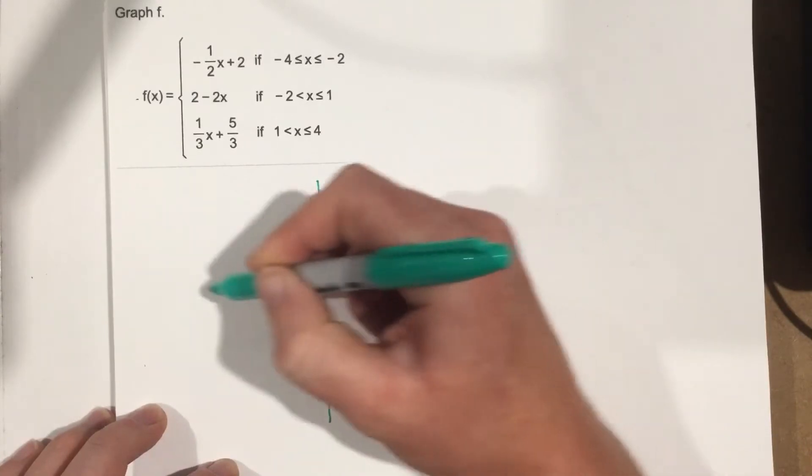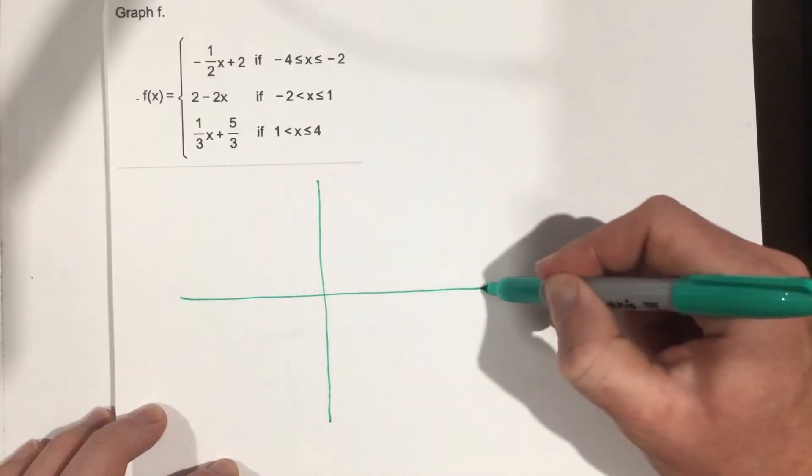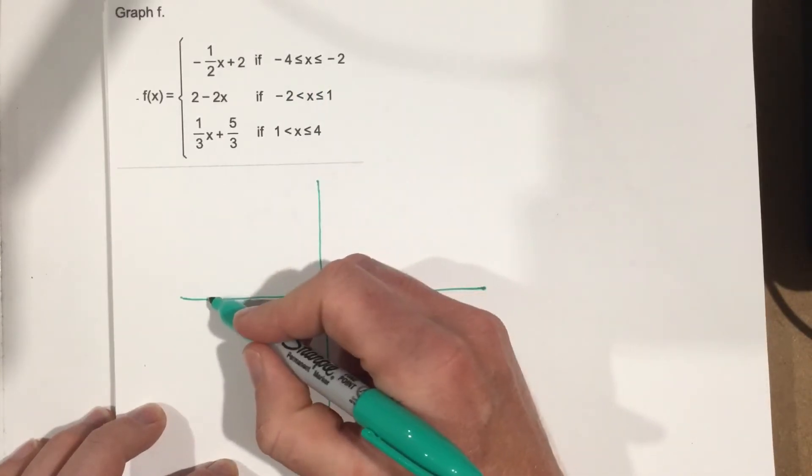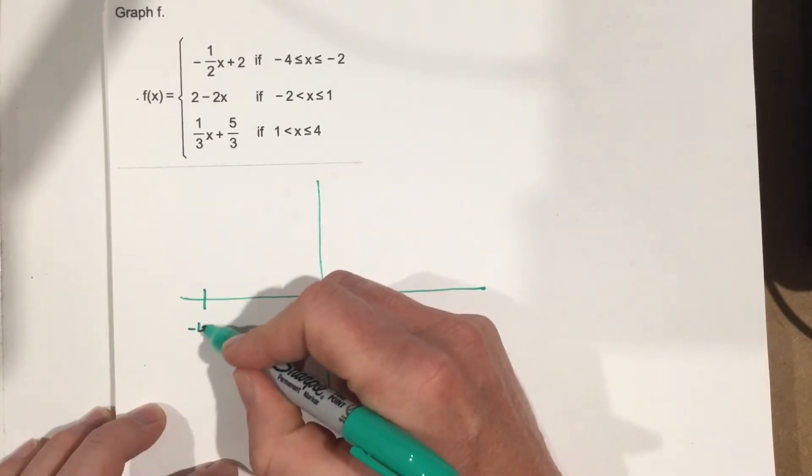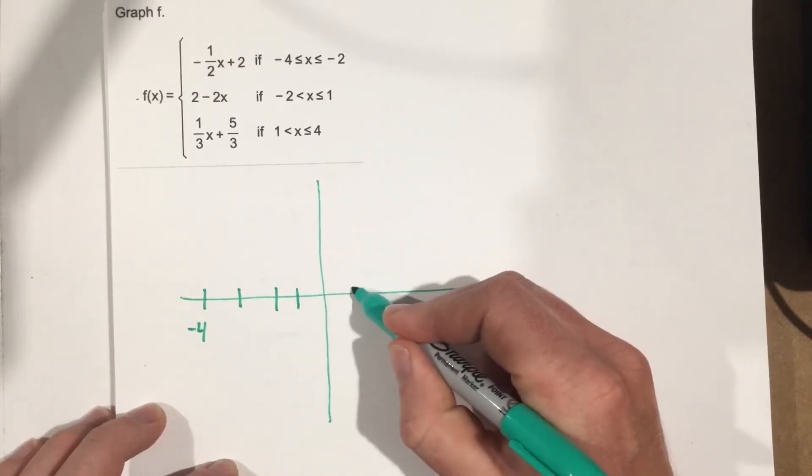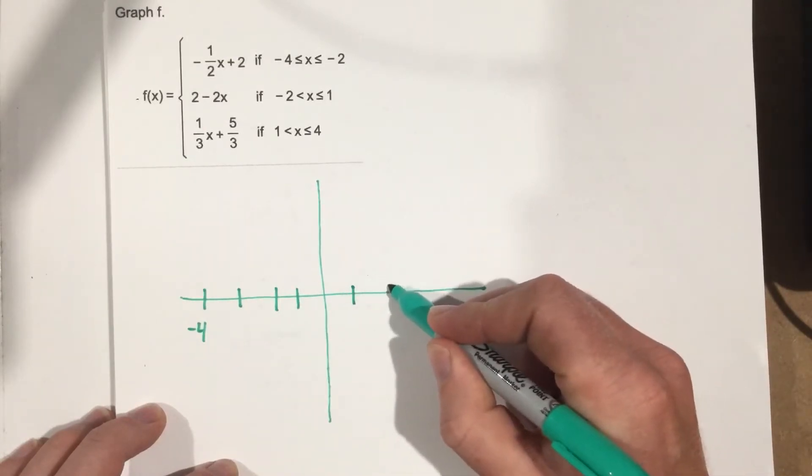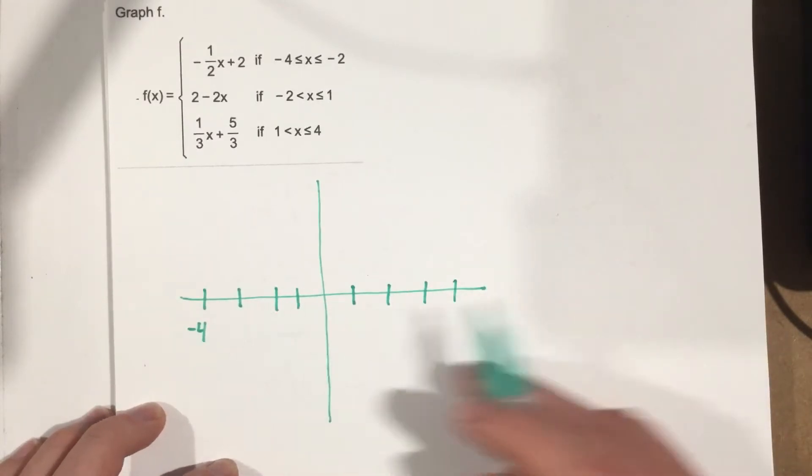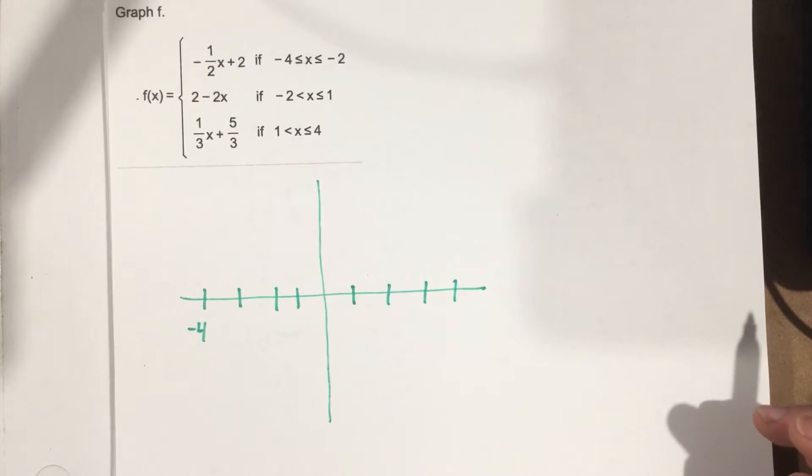So let's draw a coordinate plane. We'll mark it from negative 4 to 4. So we'll call this negative 4, negative 3, negative 2, negative 1, 1, 2, 3, 4. Now you can see it's not evenly spaced there. We're doing this by hand. If you use a graphing calculator, it'll be a little bit more exact.